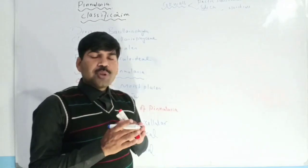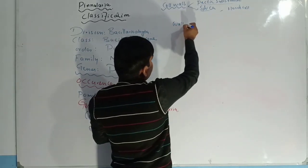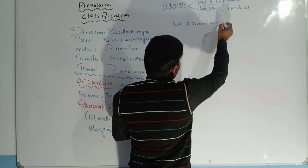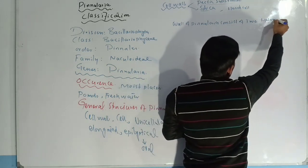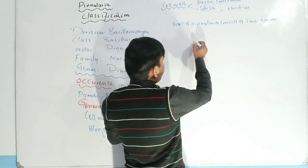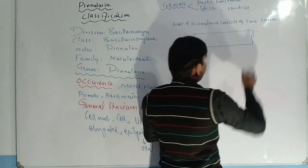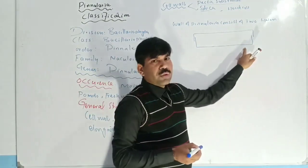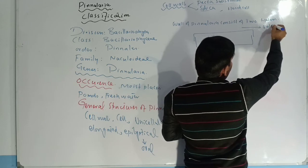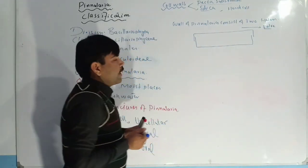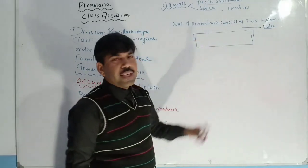The wall of Pinnularia consists of two halves. For example, this is one half and this is the other half — an upper half and a lower half. Each half is also known as a valve. The upper wall is known as epitheca, which I can label here. The lower wall is present on the lower side and is known as hypotheca.